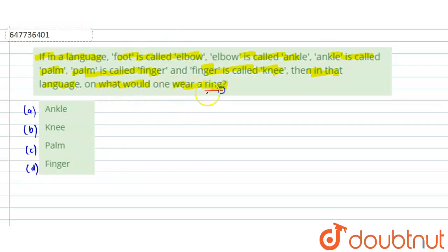We are asked where we wear a ring. We know that we wear a ring on the finger. But here's the catch: in this particular language, what do we call the finger? Knee.